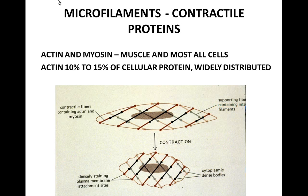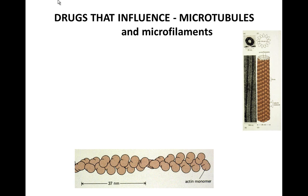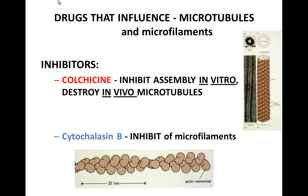Microfilaments are the contractile portions of the cell. Even in smooth muscle cells, actin and myosin are arranged so the cell can change shape and contract. There are drugs that interfere with microtubules and microfilaments: colchicine inhibits assembly of microtubules and destroys them in vivo, while cytochalasin D inhibits microfilaments from being formed.